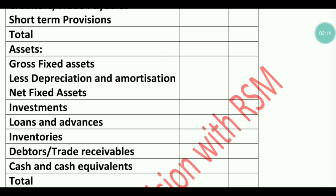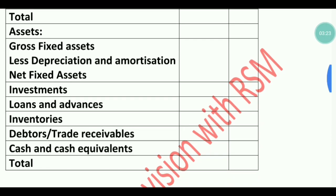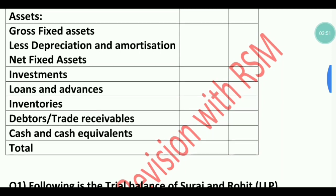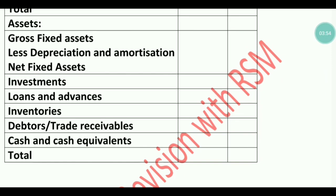The next point is Investments — all investments the company has made are recorded here. Then Loans and Advances — if you have prepaid tax or salary advance, those are recorded here as well. Next is Inventories, which is Closing Stock. The closing stock adjustment has one effect in Increase or Decrease in Stock in the income statement, and the second effect appears here under Inventories.